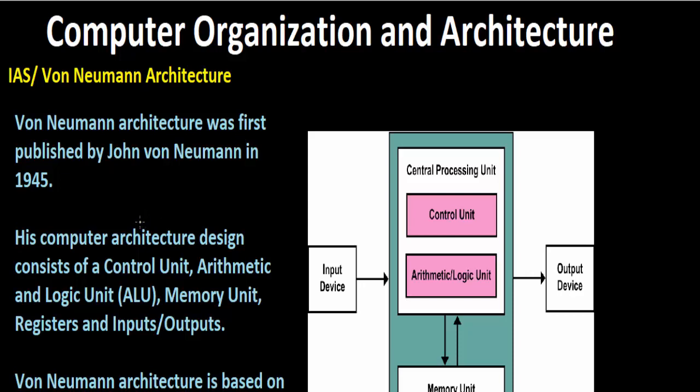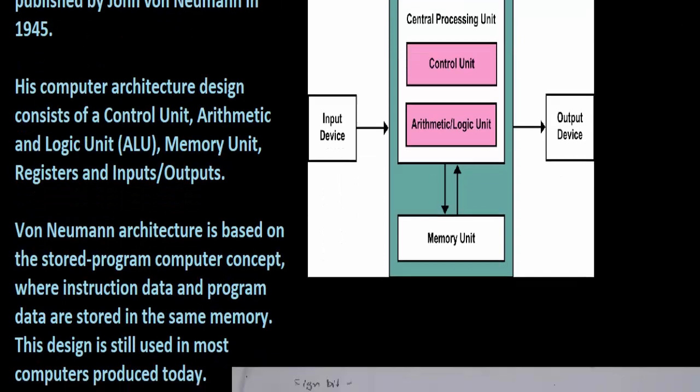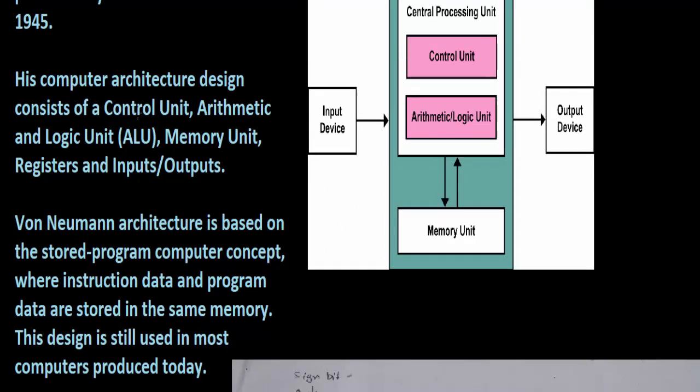Now referred to as IAS computer. With rare exceptions, all of today's computers have this same general structure and function that was designed in 1945. This was published by John von Neumann, and his computer architecture consists of a control unit, arithmetic and logical unit, memory unit, registers, and input/outputs.